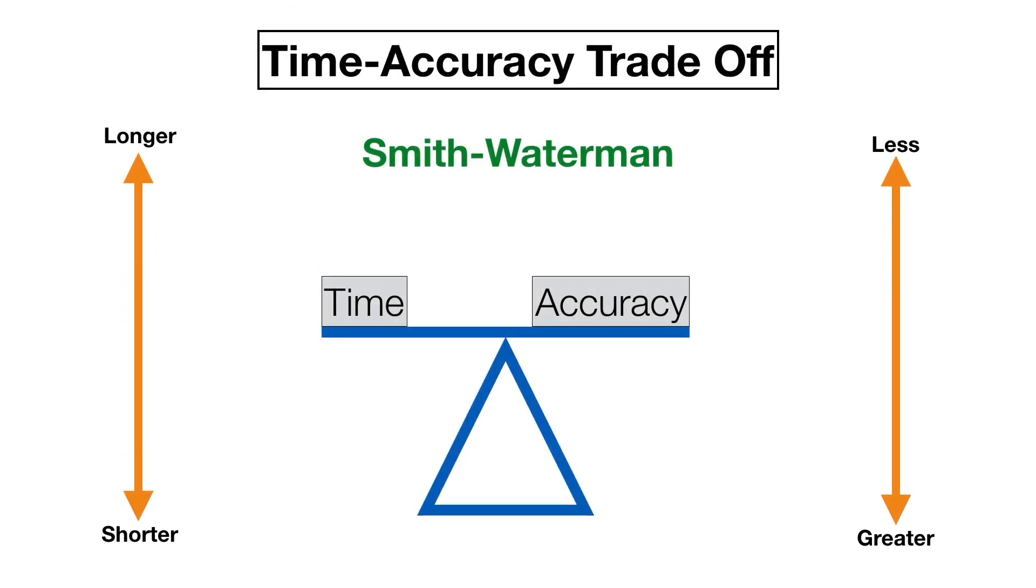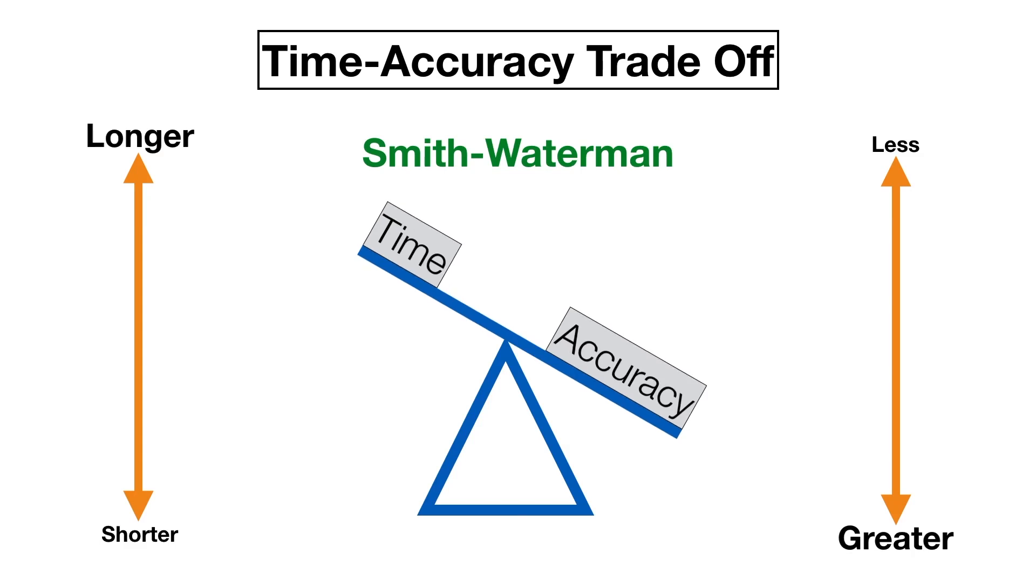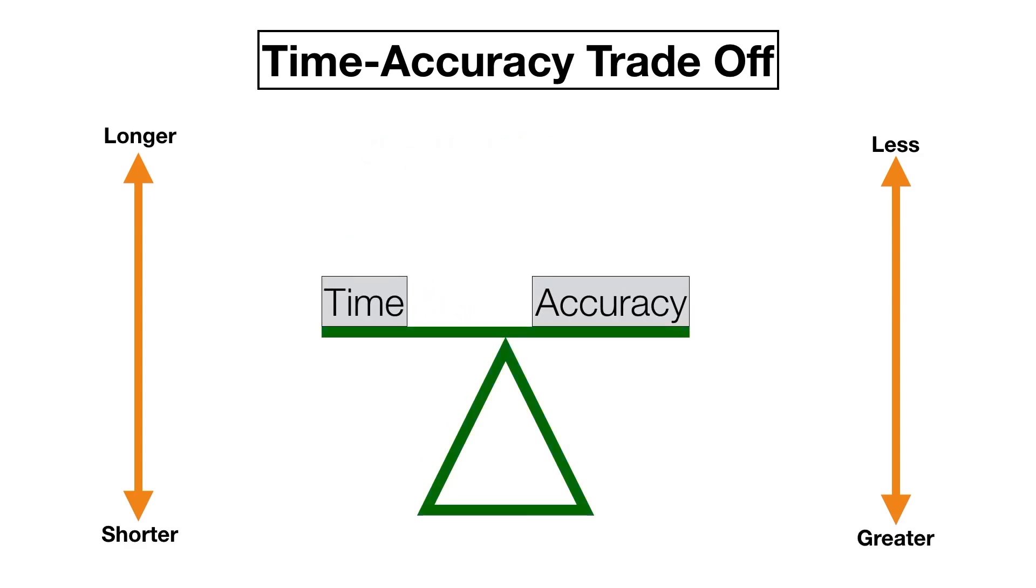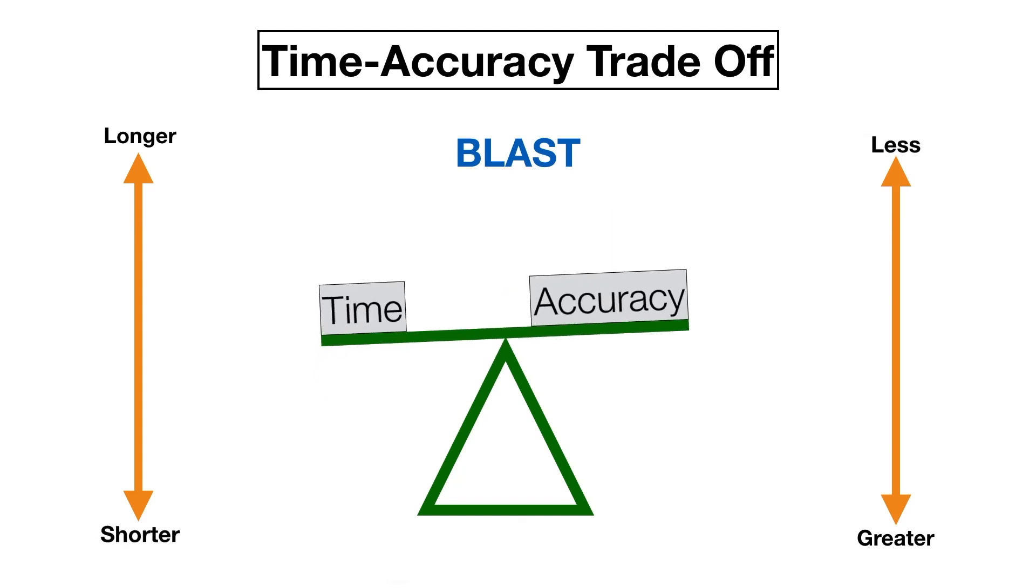Smith-Waterman invests a significant amount of time in finding the exact local alignments. BLAST lowers the time at the cost of accuracy. A BLAST local alignment has no guarantee of exactness.